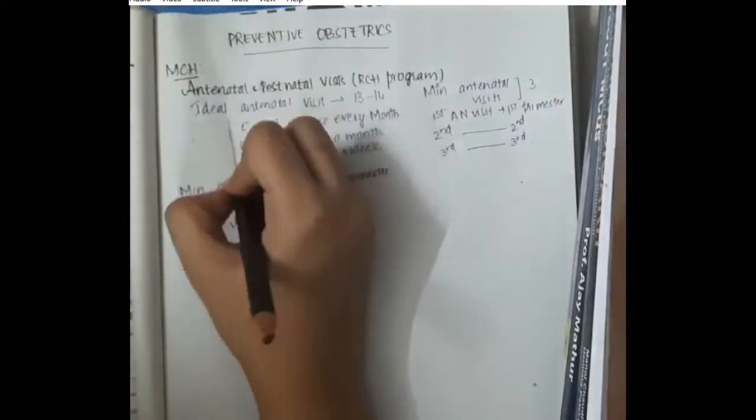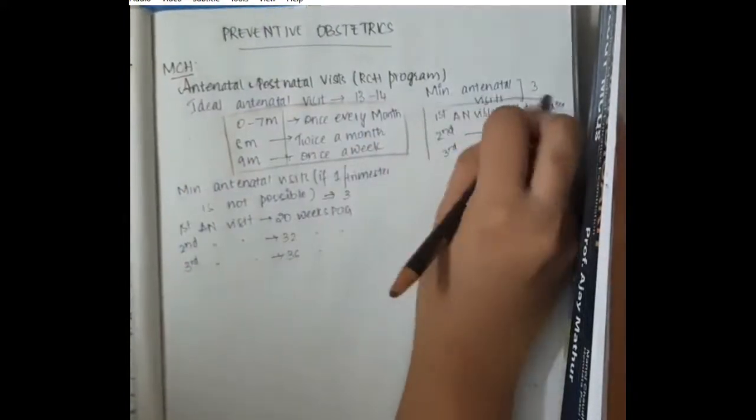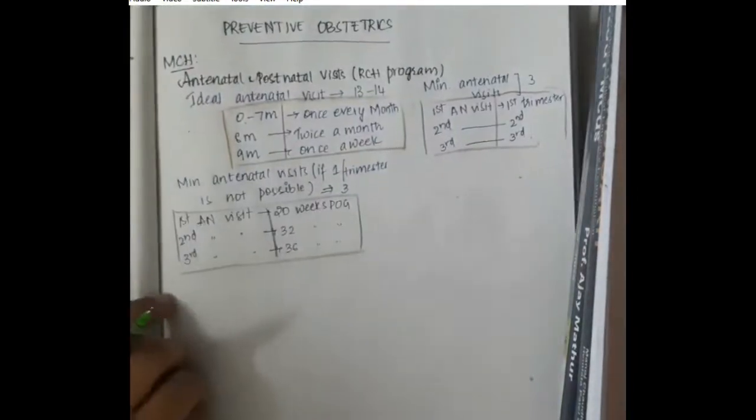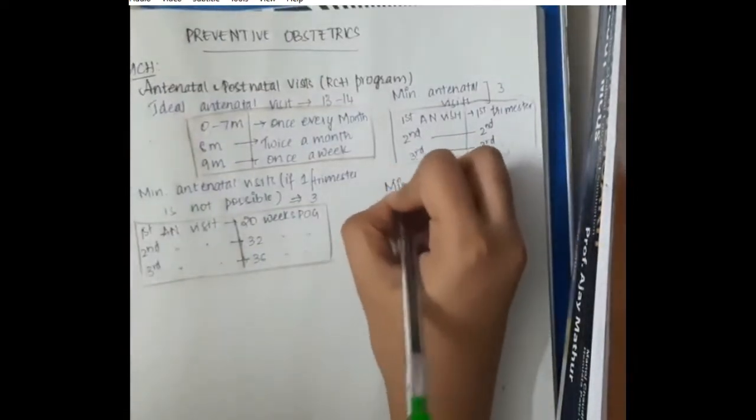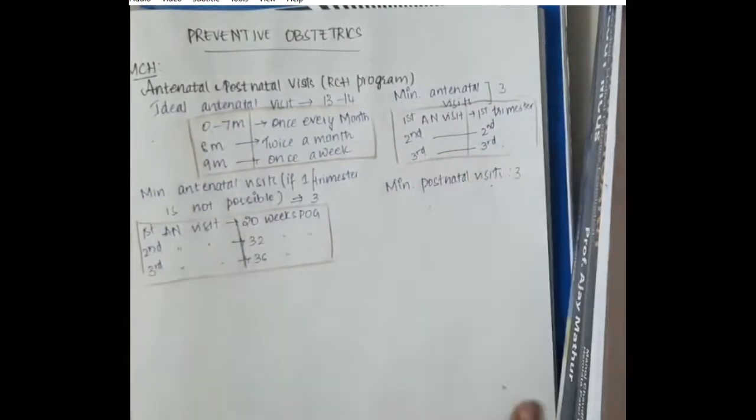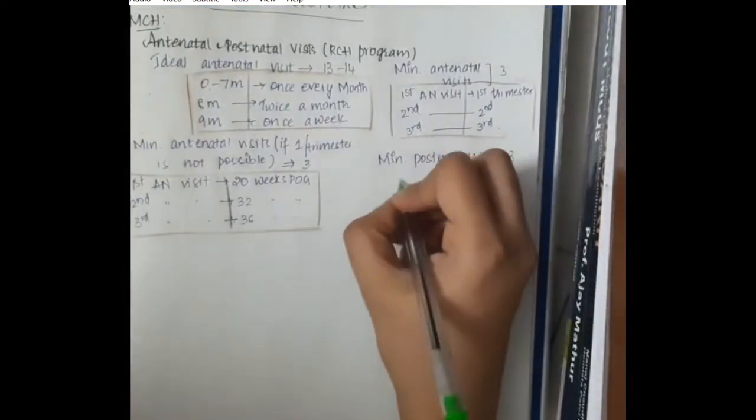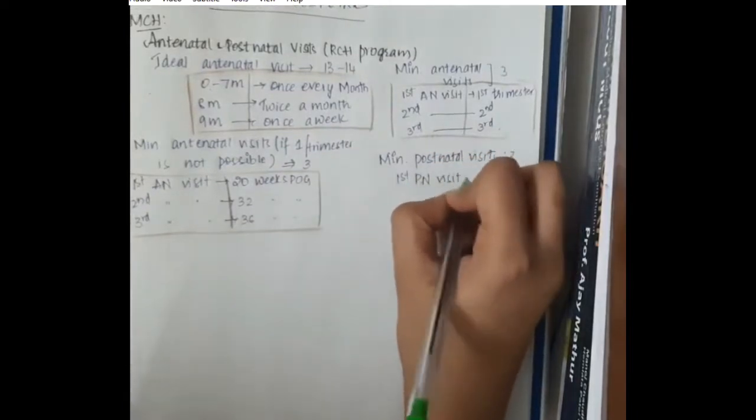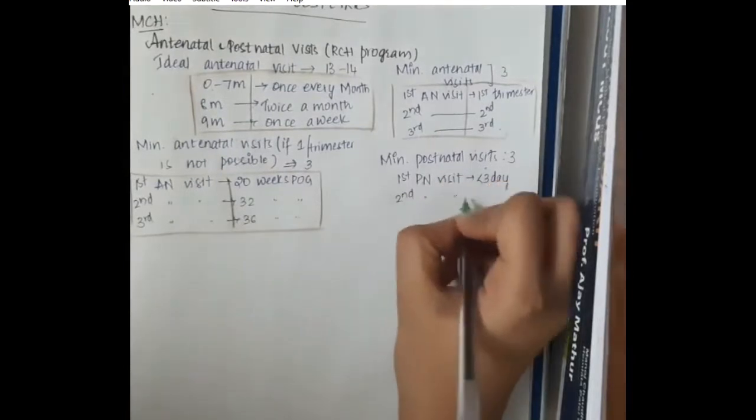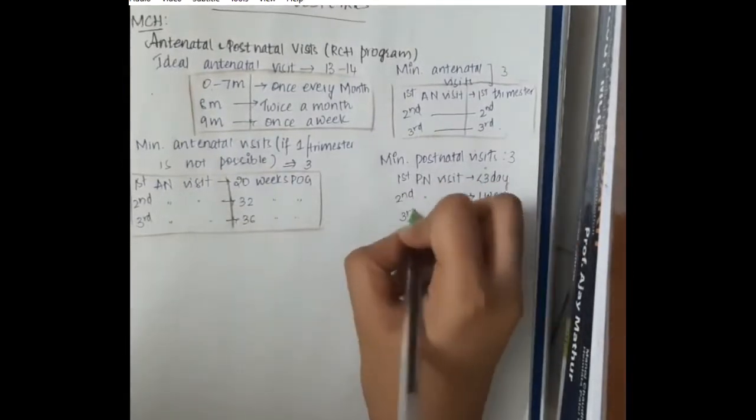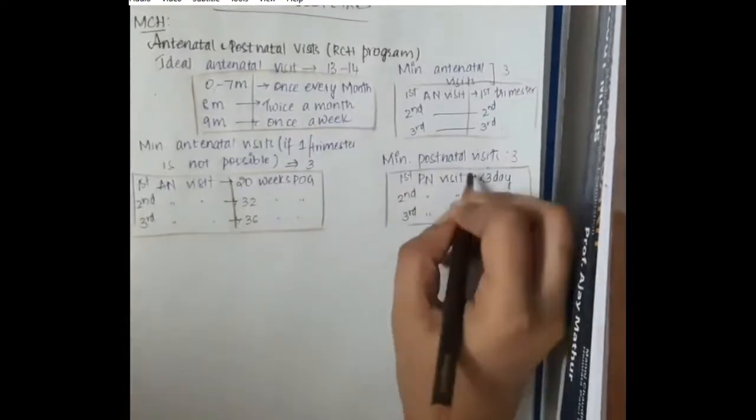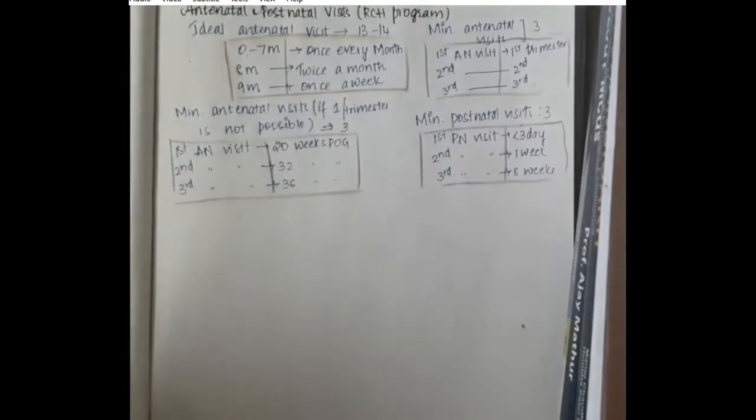And third antenatal visit should be at 36 weeks period of gestation which is important. Then we have minimum postnatal visits. Minimum postnatal visits should be around 3. The first postnatal visit should be at less than 3 days, second postnatal visit should be at around 1 week, and third postnatal visit should be at around 8 weeks. These are the minimal postnatal visits.